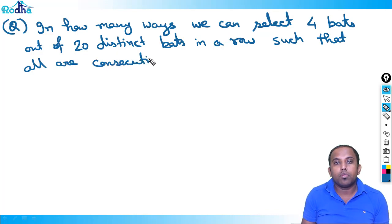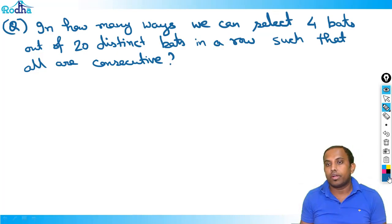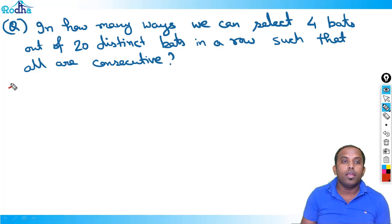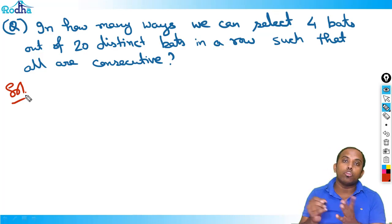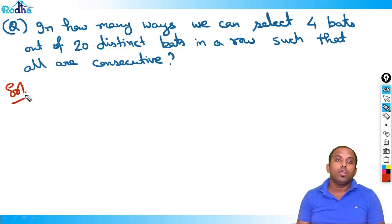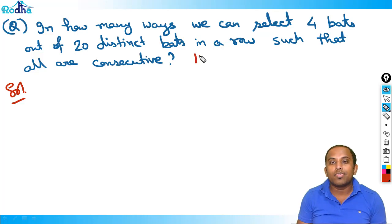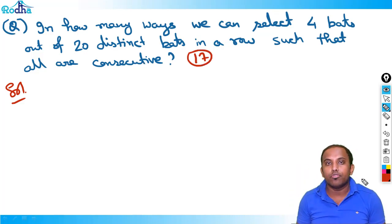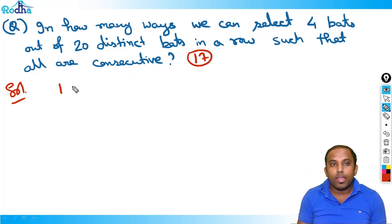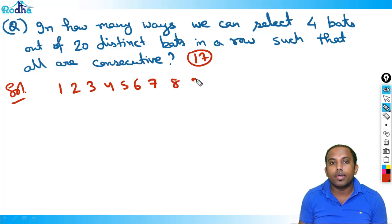Again, pause this video and try this question — you can make a mistake here. If you make a mistake and then see the solution, it will help you a lot. Let's discuss again. I assume all of you have paused and solved it. So we have 20 bats here: 1, 2, 3, 4, 5, 6, 7, 8, 9, 10, 11, 12, up to 20.